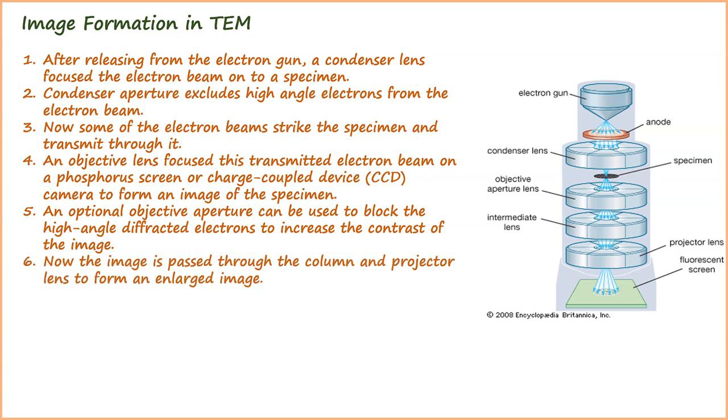Now the image is passed through the column and projector lens to form an enlarged image. When the image strikes the phosphorous screen, it generates light, allowing the viewer to see the image.